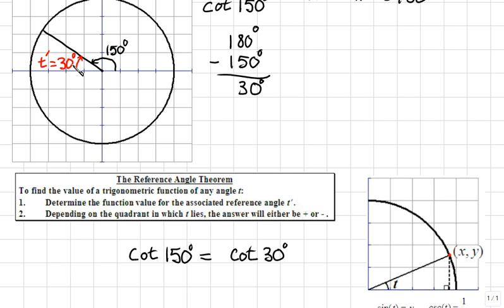in the second quadrant, we recall that cotangent is negative. So cotangent of 150 will give us the same answer as negative cotangent of 30 degrees.